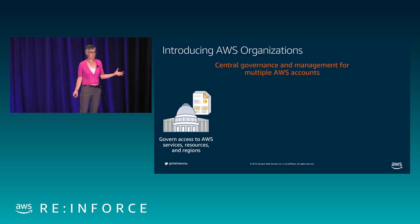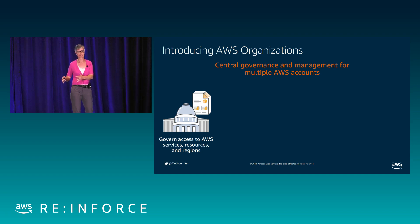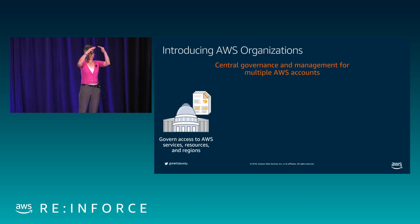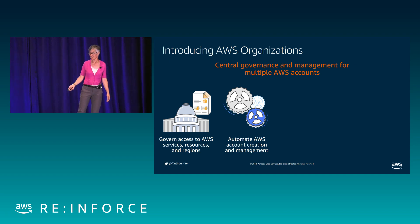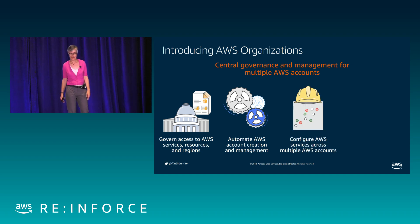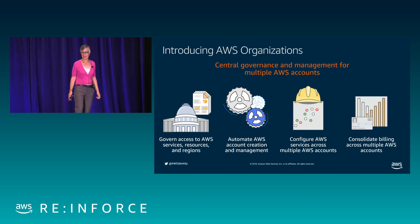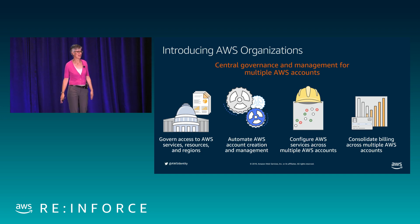AWS Organizations also lets you organize accounts into logical groups and programmatically create them. It integrates with a ton of AWS services. I want to quickly highlight two that launched just this week. First, IAM Access Advisor — a tool that shows you the services a particular account has last used. With the integration with Organizations, you can ask that same question for a group of accounts, an organizational unit, or even for your organization as a whole, and look for places to restrict permissions at an aggregate level rather than account by account.